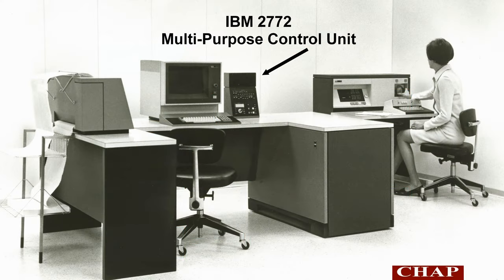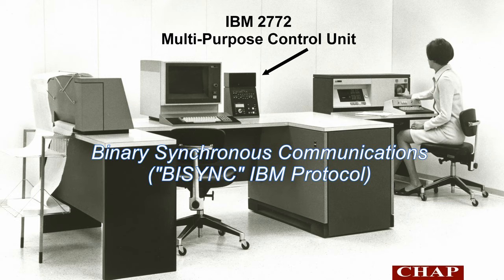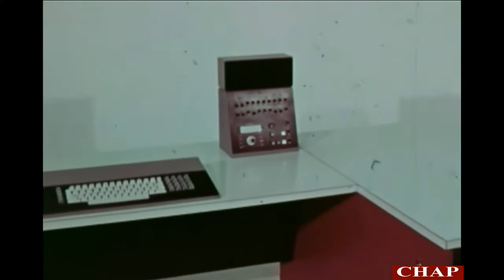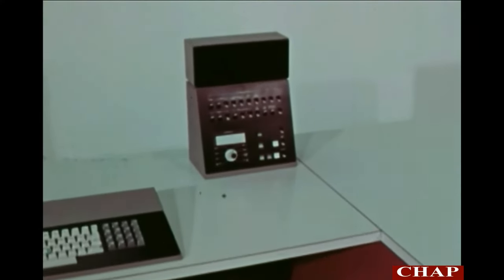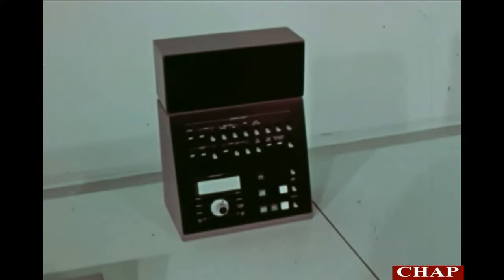The 2772 multipurpose control unit is the heart of the system. The 2772 contains two 128-character buffers expandable to 256 each. The 2772 is a member of the binary synchronous communications family. It transmits and receives on a communication line at speeds up to 2400 bits per second. The 2772 console is designed for simplicity of operation.